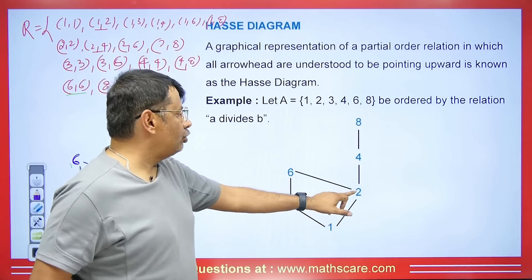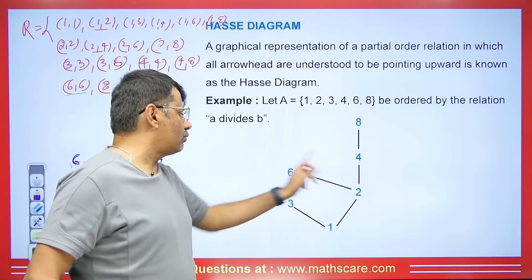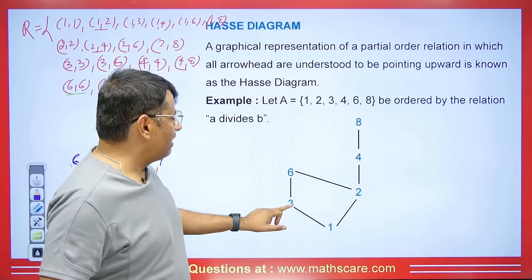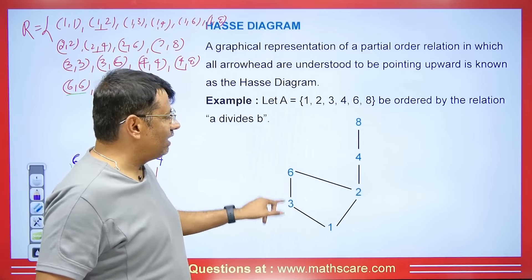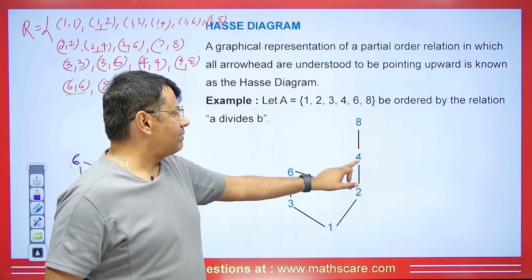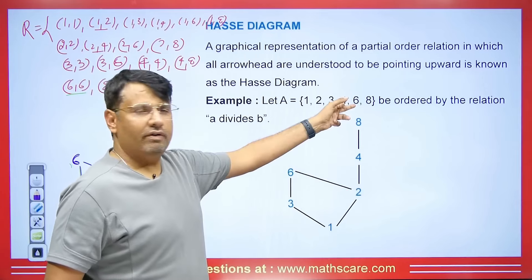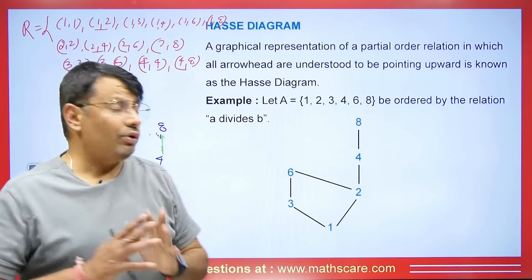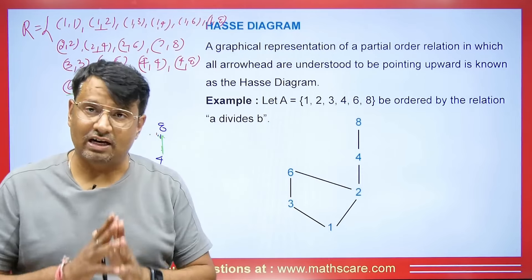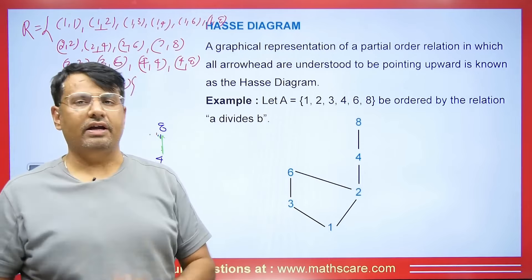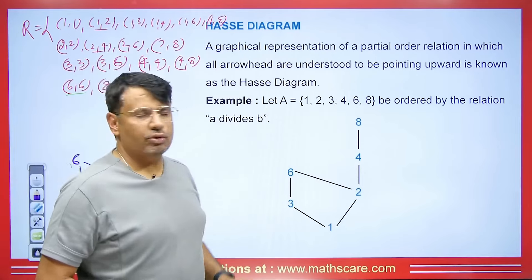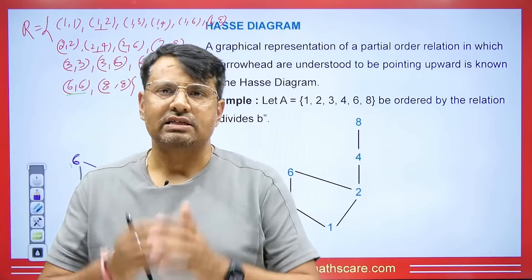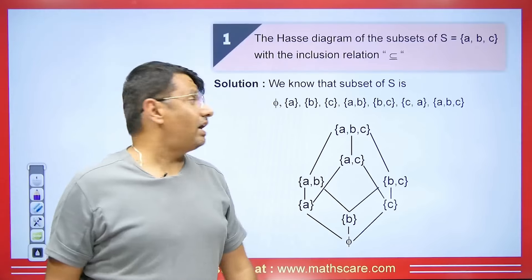In the resulting diagram: 1 is dividing 3, 1 is dividing 2. 2 is dividing 4 and 8, and also 6. 3 is dividing 6. 4 is dividing 8 and 8 is not dividing anything. This is the Hasse diagram, and it is very important.